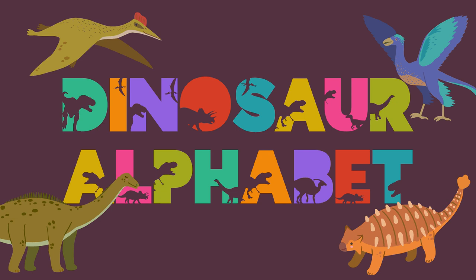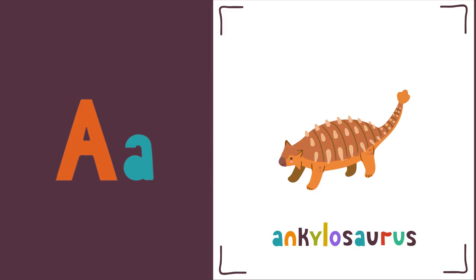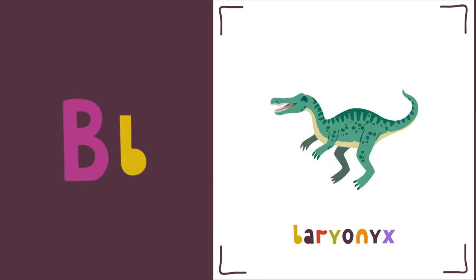Hey Sprouts, let's say the dinosaur alphabet. A is for Ankylosaurus. A, Ankylosaurus. B is for Baryonyx. B, Baryonyx.